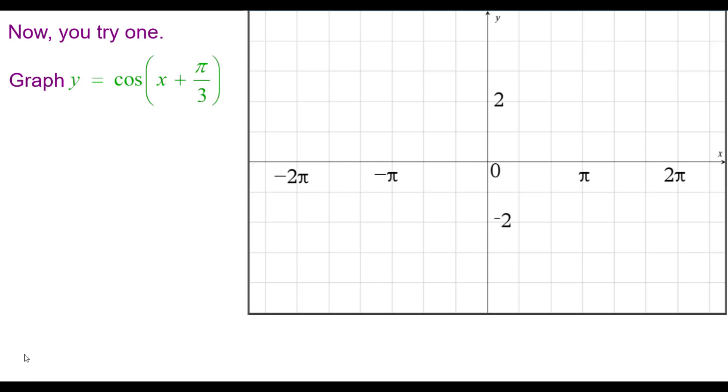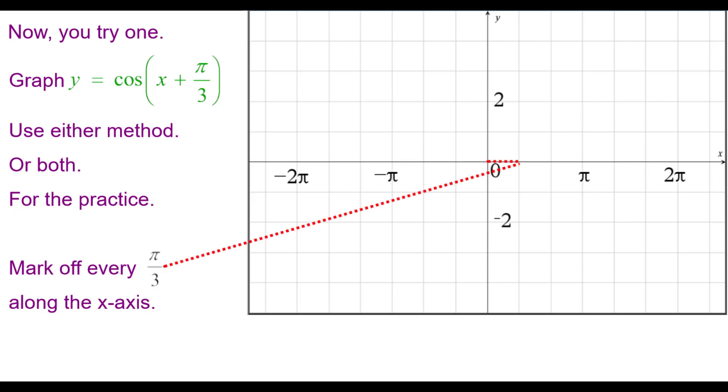Now you try one. Graph y equals the cosine of the quantity x plus pi over 3. Use either method or both for the practice. You should mark off every pi over 3 along the x-axis so that this plots carefully. Pause as needed.